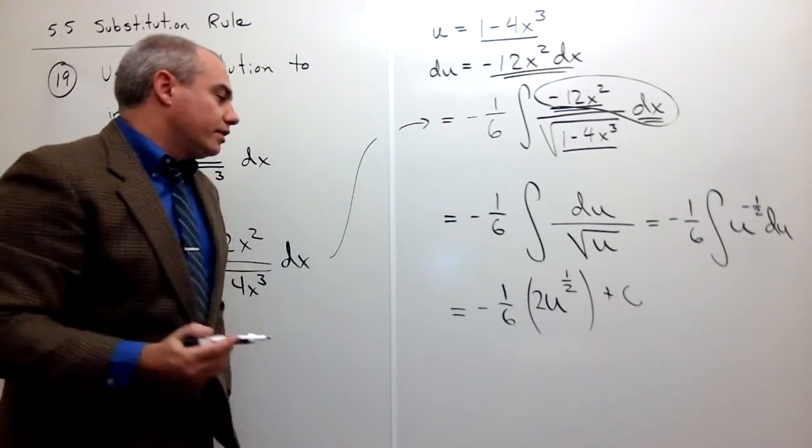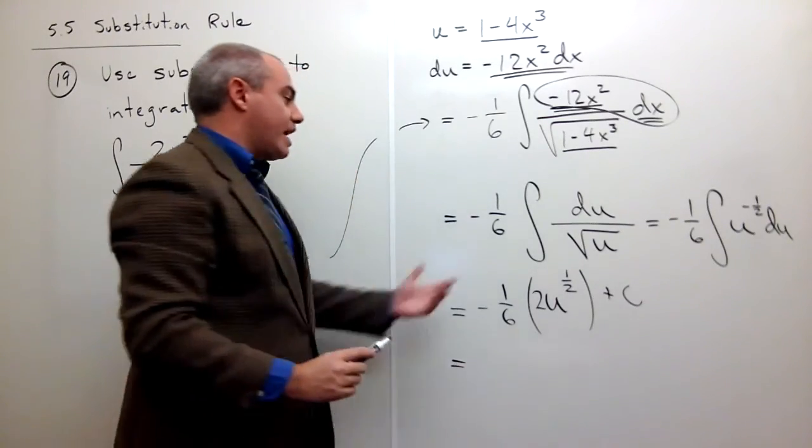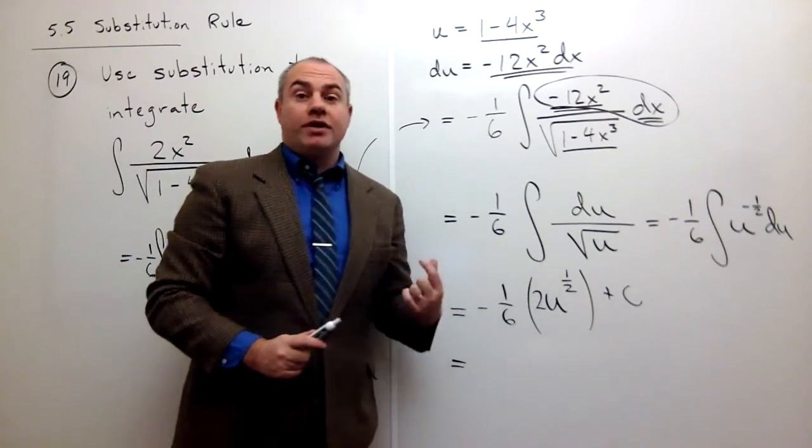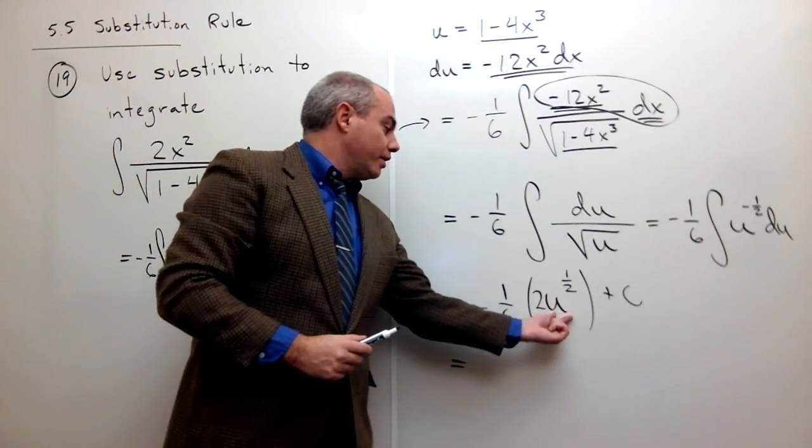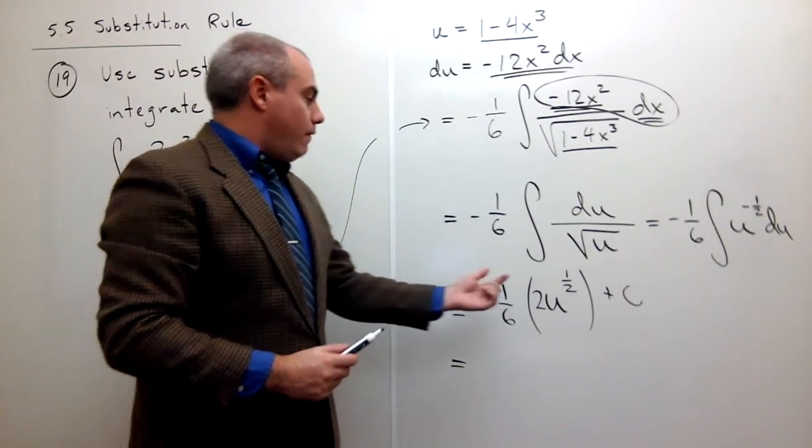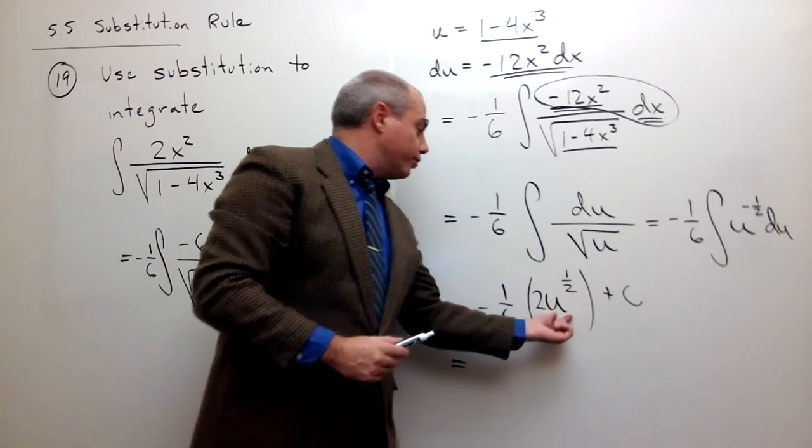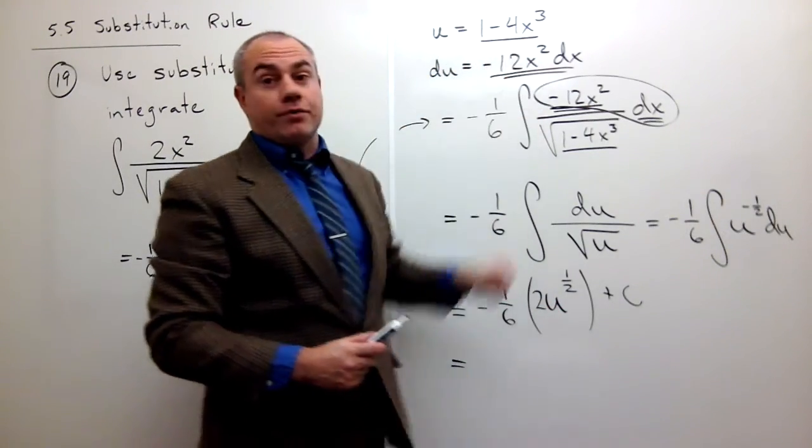All right, let's rewrite this. We're almost done. I've taken the anti-derivative. The only thing that's left to do is I need to rewrite this u as x's. So I need to remember that u is equal to 1 minus 4x cubed.